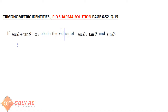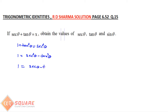We know that 1 + tan²θ = sec²θ. So 1 = sec²θ - tan²θ, which factors as 1 = (sec θ - tan θ)(sec θ + tan θ).